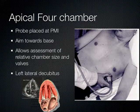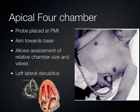The apical 4-chamber view is obtained by putting the indicator to the patient's right, and you're really going for that PMI — that place on the chest where the apex of the heart comes to the chest wall. This is made easier when you put the patient in left lateral decubitus, as you're about to see.